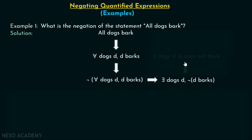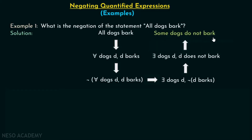'Not d barks' can be written as 'd does not bark.' So: there exists dogs d, d does not bark. We can easily write this as: 'some dogs do not bark.' You can see that we can easily find the negation of these types of statements by following this procedure. The negation of 'all dogs bark' is 'some dogs do not bark.'